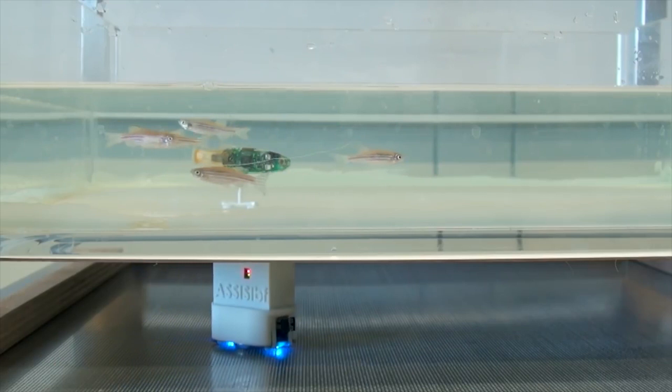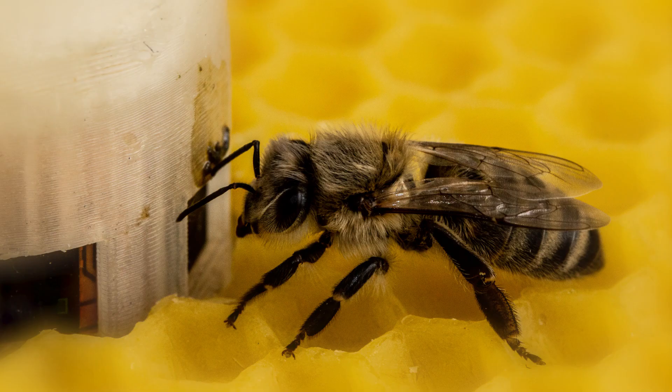Four different experiments were performed with varying degrees of communication between the animal groups. The first experiment established a control group, with no communication between the fish and the bees.